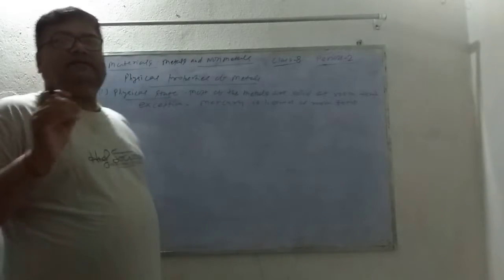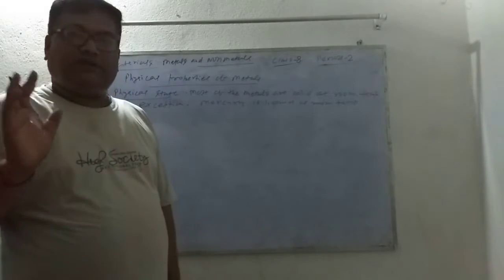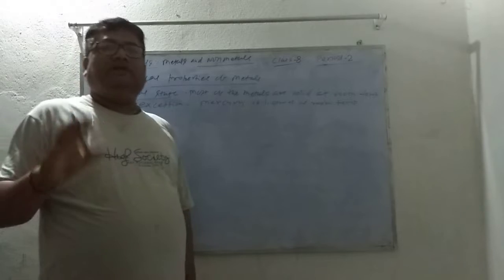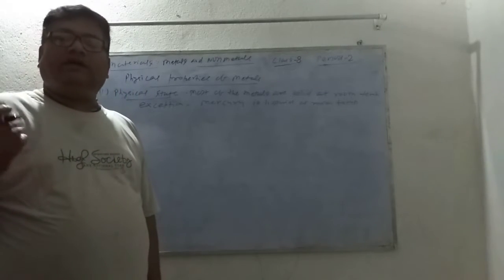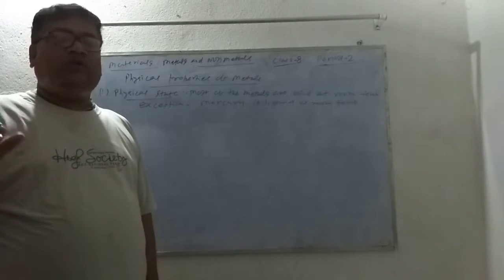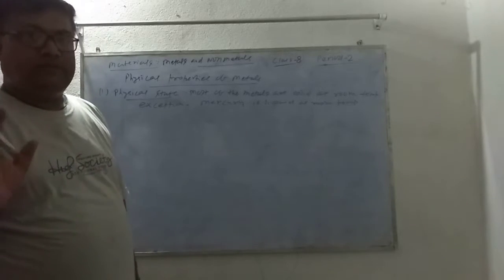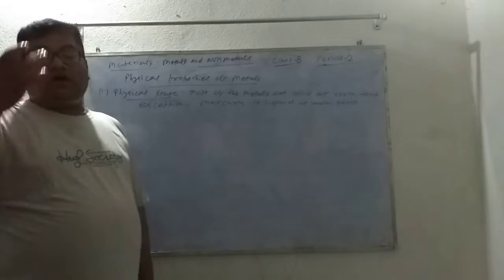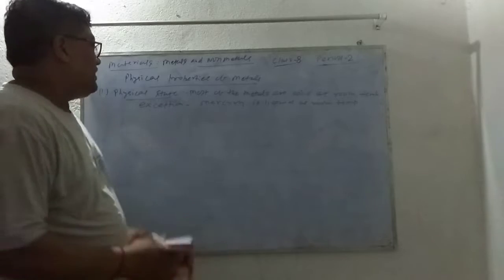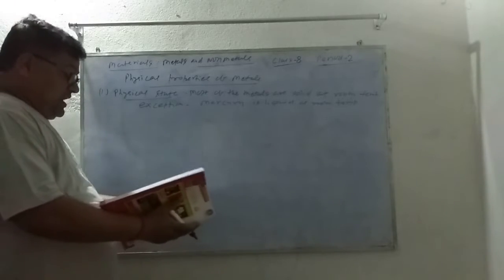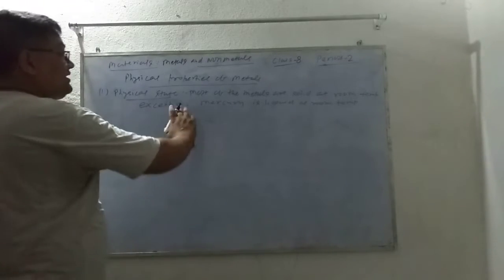Mercury is liquid at room temperature. Most metals — like iron, aluminum, and copper — are solid at room temperature. The exception is mercury. The other thing is malleability in metals.